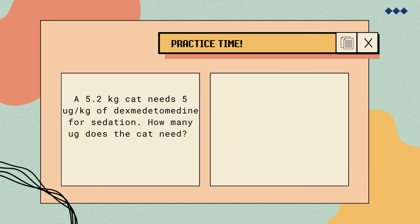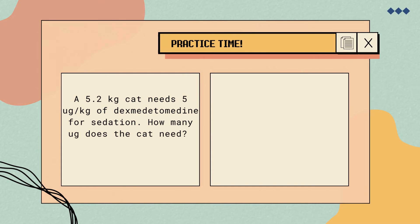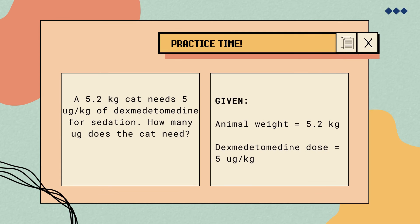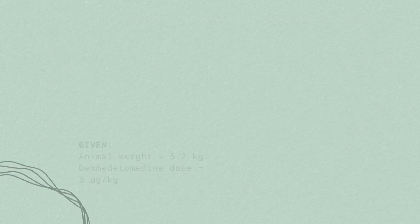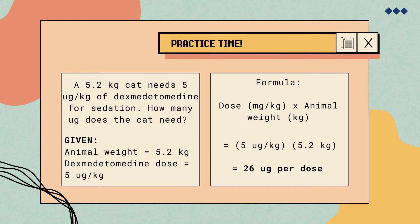Let's see if you got the correct answer. First, let's determine our given: the weight of the cat is 5.2 kilograms and the dexmedetomidine dose is 5 micrograms per kilogram. To solve, we use the same formula — animal weight multiplied by the dose. So, 5.2 kg times 5 mcg/kg equals 26 micrograms per dose.